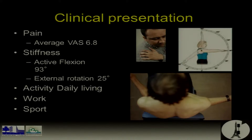These patients are complaining of pain — in our series the average was around 7 — with stiffness. Most of the time they don't go much above 90 degrees of elevation, with loss of external rotation, and this affects activities of daily living, work, and sport.